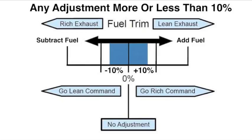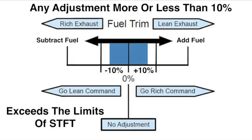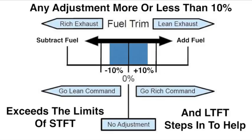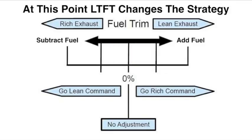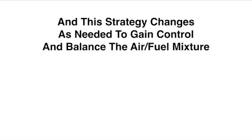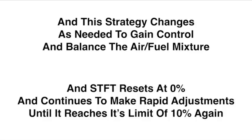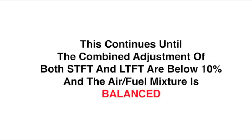Now, here we colored in the 10% limit. Any adjustment, more or less than 10%, exceeds the limits of the short-term fuel trim. And the long-term fuel trim steps in to help. At this point, the whole strategy changes. And this strategy changes as needed to gain control again and balance the air-fuel mixture. And the short-term fuel trim will then reset at zero. And then it will continue to make rapid adjustments until it reaches its 10% limit again. This continues until the combined adjustment of both the short-term and the long-term are below 10%. And at that point, the air-fuel mixture would be balanced.